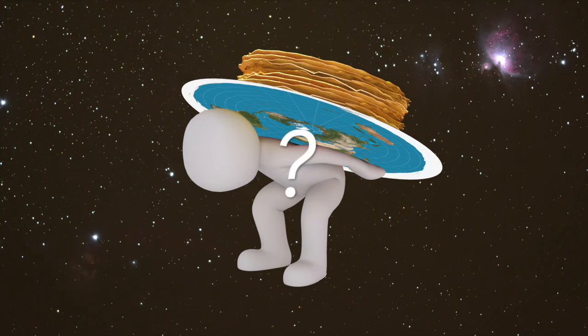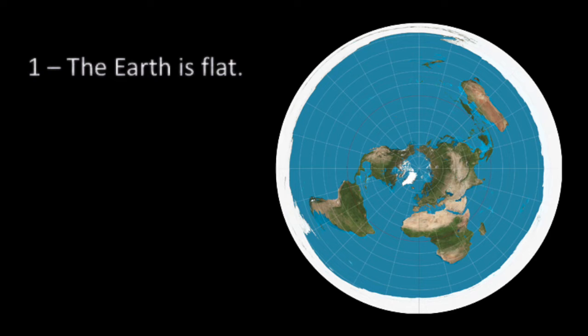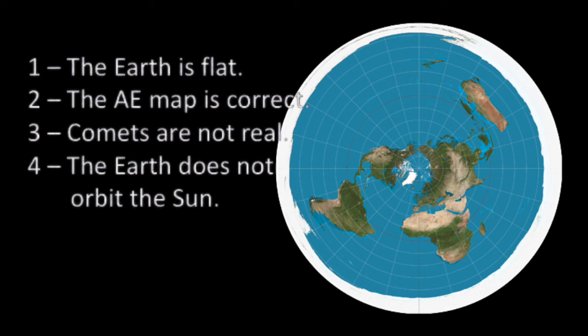But how does this look on a flat Earth? We will start with the following assumptions. The Earth is flat, the AE map is the best representation of reality, comets are not really flying around in space, and the Earth does not orbit the Sun.